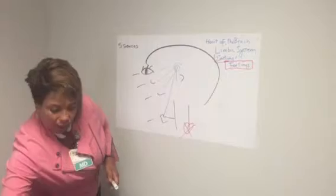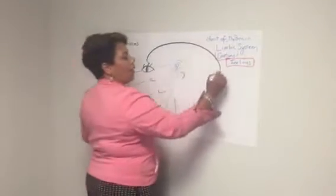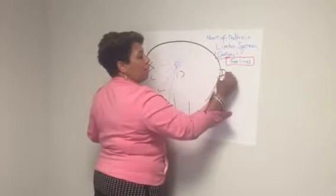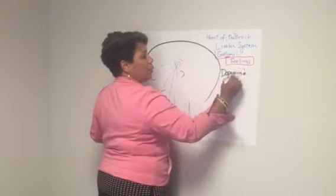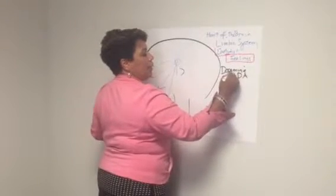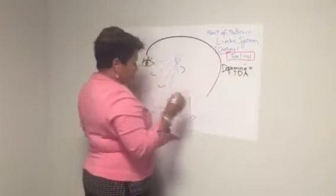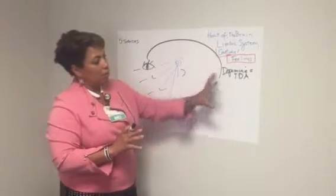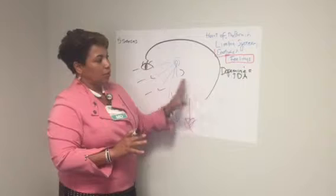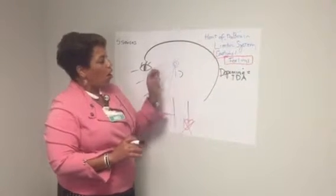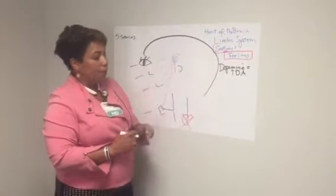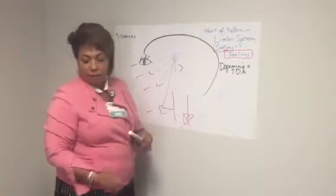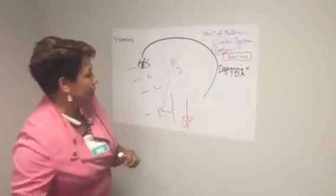Those feelings are controlled by a brain chemical called dopamine. It's the brain's natural dope. We abbreviate that DA. Now, all chemicals of abuse, all substances of abuse—heroin, cocaine—all end up stimulating this very same part of the brain called the limbic system.